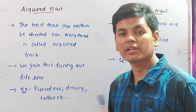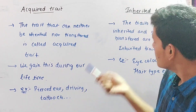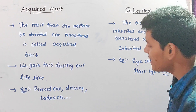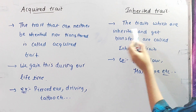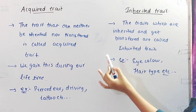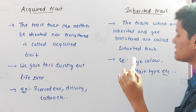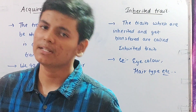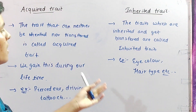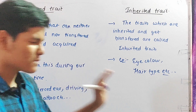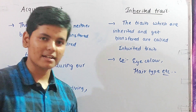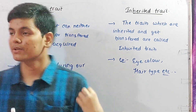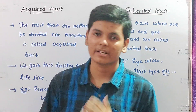Inherited traits are the traits which are inherited and get transferred. Examples include eye color, blood group in some cases, and hair type. These are the differences between an acquired trait and an inherited trait: acquired traits can neither be inherited nor transferred, while inherited traits are passed from parents to offspring.